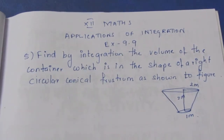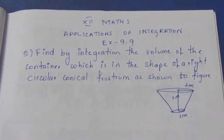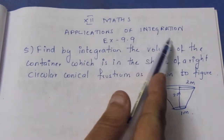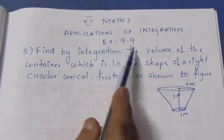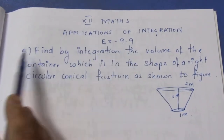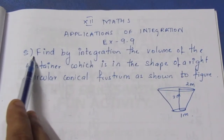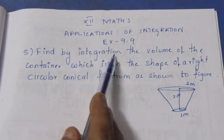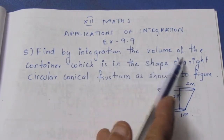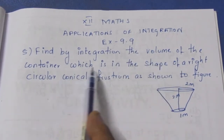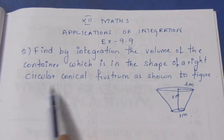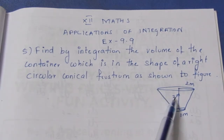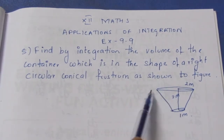Hello viewers, I am Mightly. In the 12th Max Applications of Integration, Exercise 9.9, fifth sum in the video. Find by integration the volume of the container which is in the shape of a right circular conical frustum as shown in the figure.